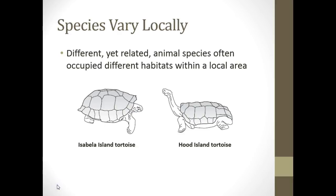Species vary locally. Different yet related animal species often occupy different habitats within a local area. We have a small cluster of islands where the HMS Beagle stopped — Isabella Island and Hood Island. Within a relatively close distance between the two islands, you can see two major differences in neck lengths between the two tortoises. This is an example of species vary locally.